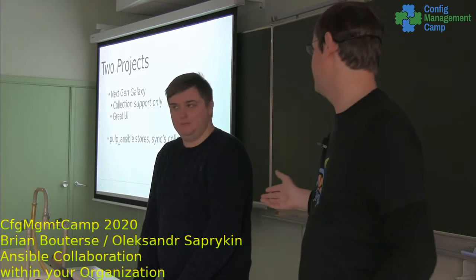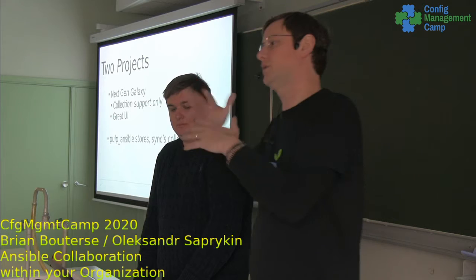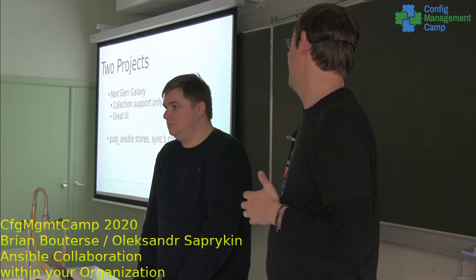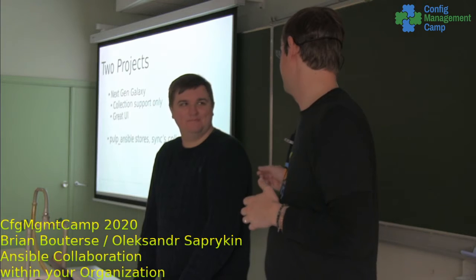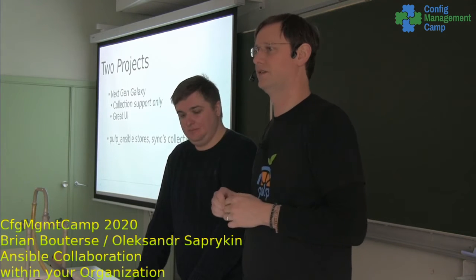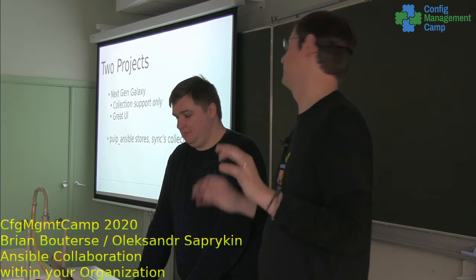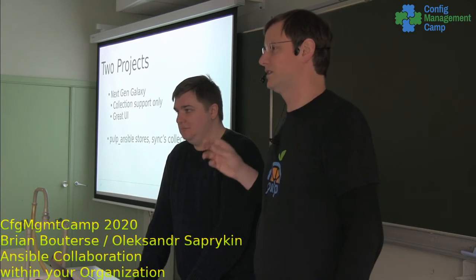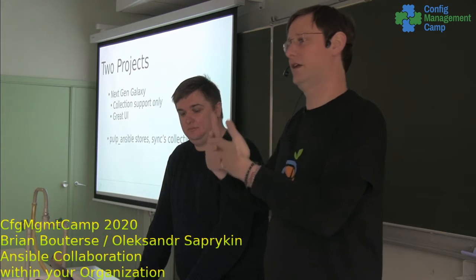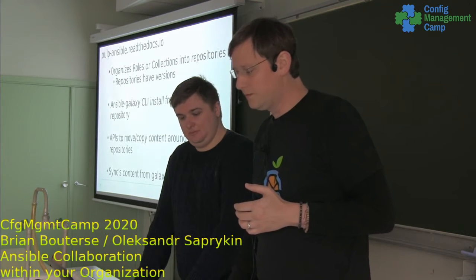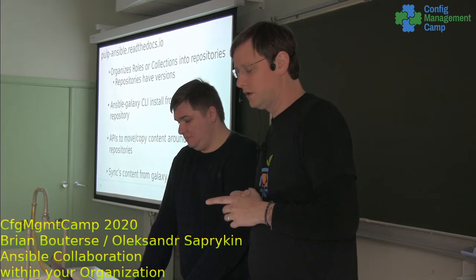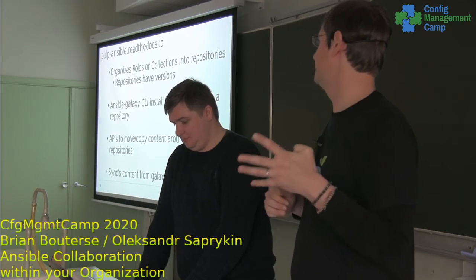We have two projects. The first one is the next-generation Galaxy, which has collection support only — and it features a great UI that we'll see in the demos later, driving on top of these APIs. Then there's pulp_ansible, or as we just call it, Pulp Ansible. Pulp Ansible is the software you can install as a registry on-premise. It's designed to be the backend to the next-gen Galaxy frontend project we're co-developing.